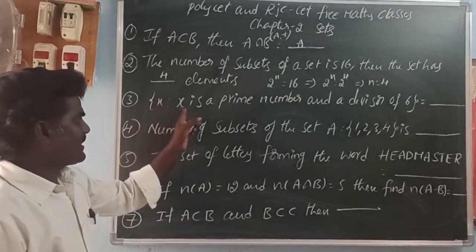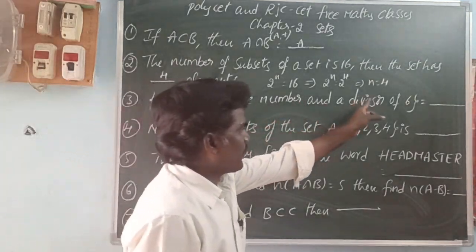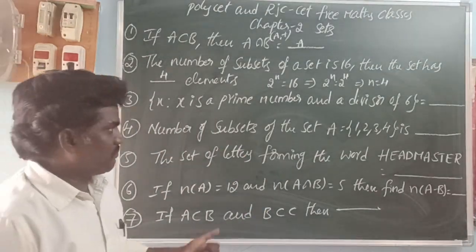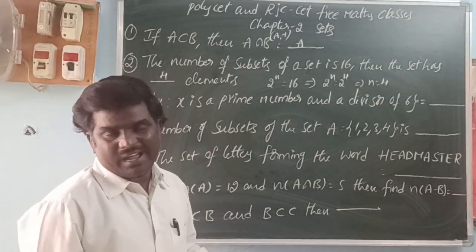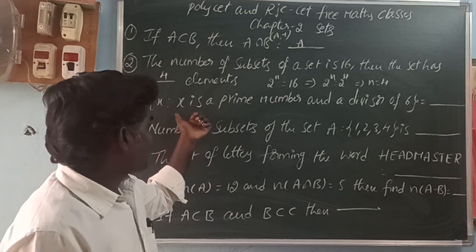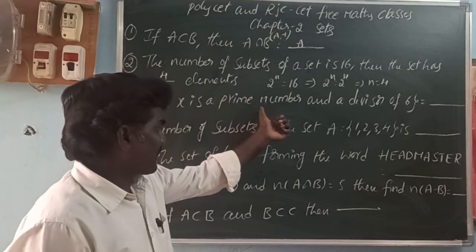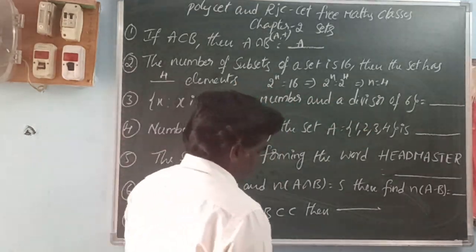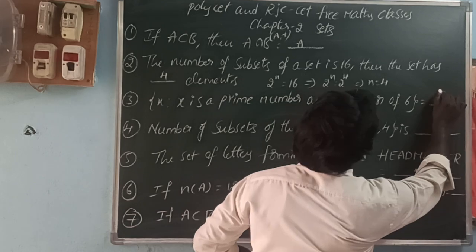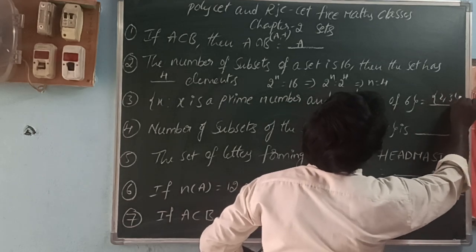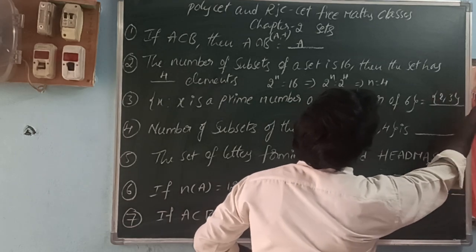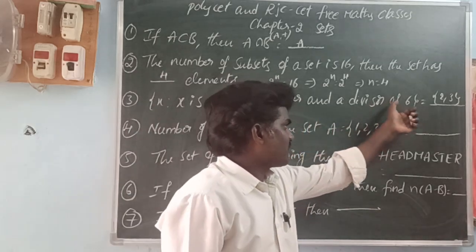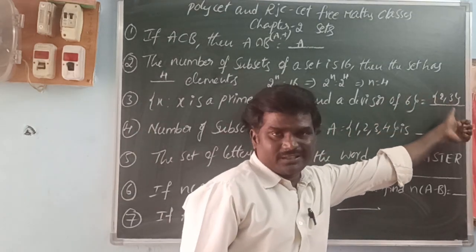Next: A equals the set such that x is a prime number and a divisor of 6. Divisor means factors. So, what are the prime numbers that are divisors of 6? 2 and 3. So, 2 and 3 are prime numbers and the divisors of 6 are 2 and 3.